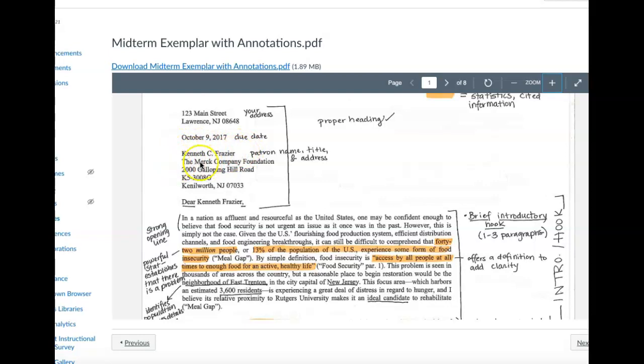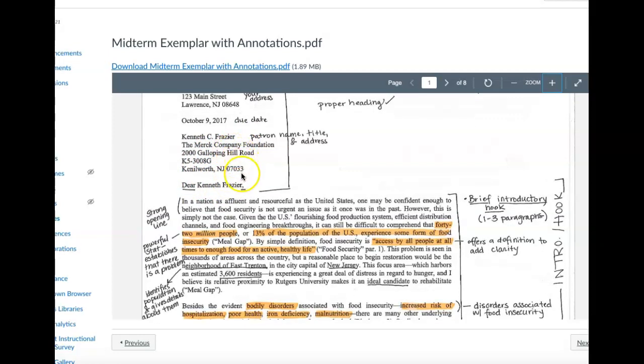Then you would put to whom the letter is being addressed. This is your patron. I've talked about this a lot in prior videos, but you want to make sure that you are writing to an individual person. So you'll see that Alex has chosen to write to Kenneth Fraser and he is from the Merck Company Foundation. So you'll see we have his name, where he's from, and the address of that patron and where that foundation is located. Then we have another space.